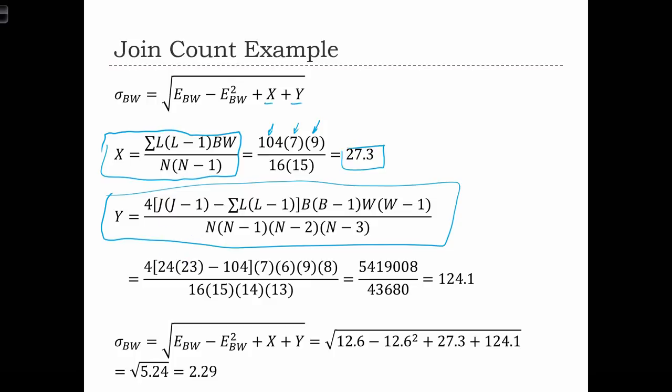This sum of l times l minus 1, that's 104. Then we've got blacks times blacks minus 1 and whites times whites minus 1, all over n, n minus 1, n minus 2, n minus 3. So when we compute this big multiplication, we get y equals 124.1.